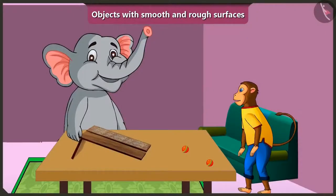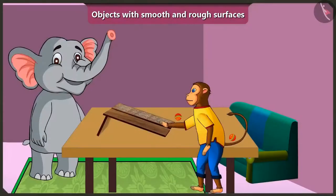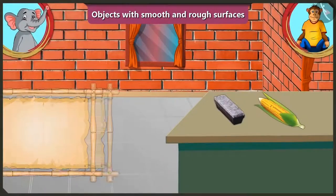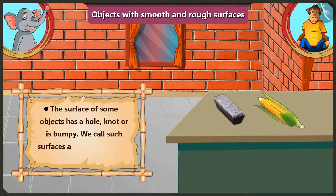Now touch and feel the other slope. Oh, its surface is too rough. This slope has a rough surface. Appu, when the surface of an object has holes, knots or is bumpy, we call that a rough surface. Our hand cannot slide on it easily.